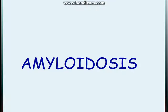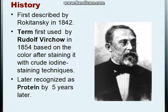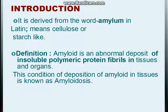Today we will discuss amyloidosis. The word 'amyloid' was first described by Rokitansky in 1842, and the term was used by Rudolf Virchow based on the color after staining with iodine. It was later recognized that it is a protein. The word is derived from 'amyloid' meaning cellulose or starch-like, whereas we now know it is a protein.